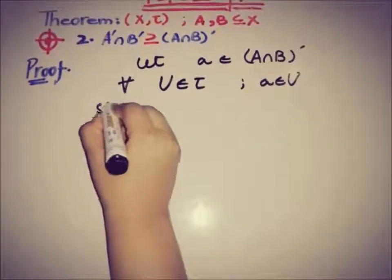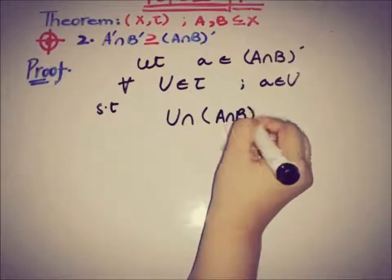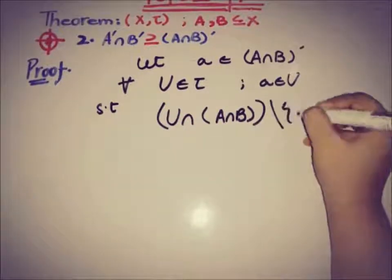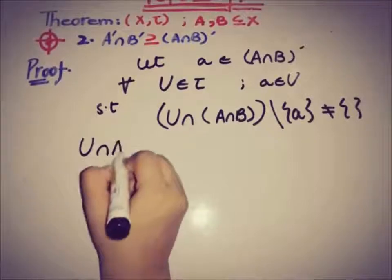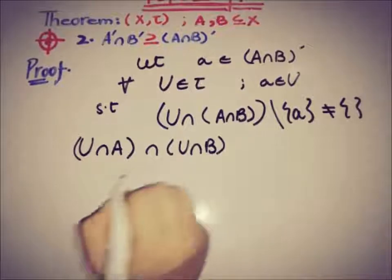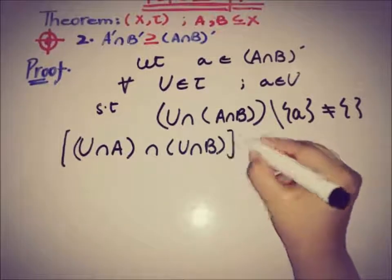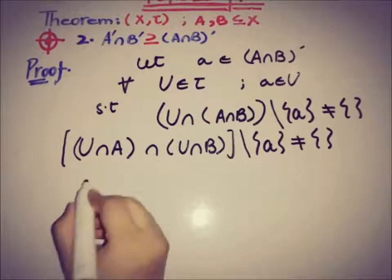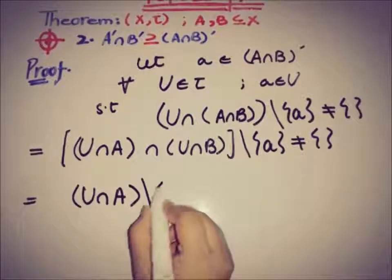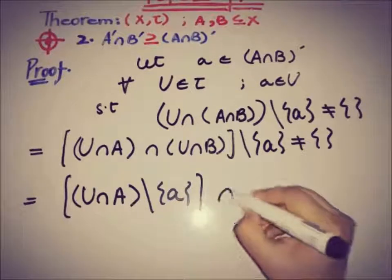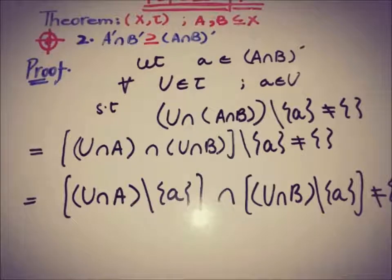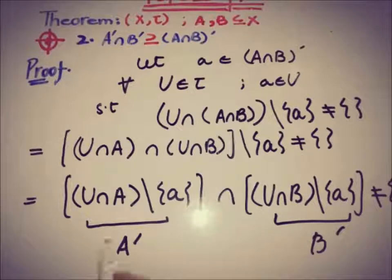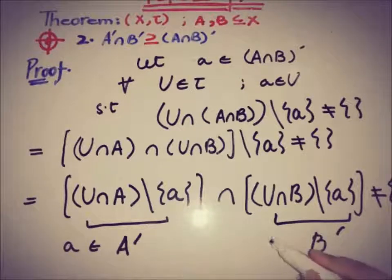So for every open neighborhood U of a, U ∩ (A ∩ B) \ {a} ≠ ∅. We can write this as (U ∩ A) ∩ (U ∩ B) \ {a} ≠ ∅. This means both U ∩ A \ {a} and U ∩ B \ {a} are non-empty. This implies that a is an accumulation point of A and also an accumulation point of B.